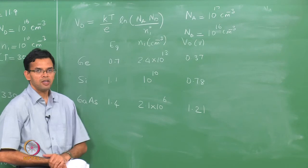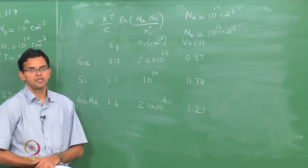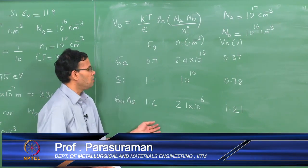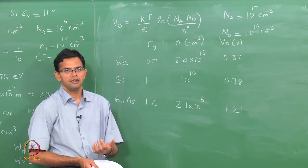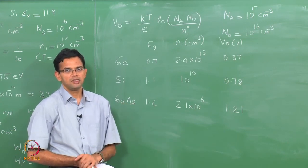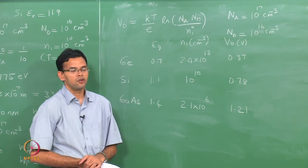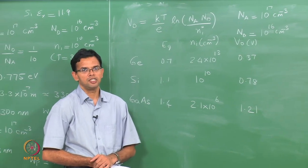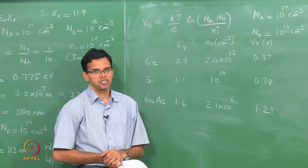Today we have looked at a P-N junction in equilibrium with no external potentials applied. We saw that electrons move from the N-side to the P-side and holes move the other way, creating a depletion region. In the next class, we are going to look at the I-V characteristics of a P-N junction and what happens when we apply a bias to this junction.